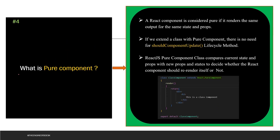The next question is: what is a pure component? A React component is considered pure if it renders the same output for the same state and same props. If we extend the class with pure component, there is no need for the shouldComponentUpdate lifecycle method. In my previous session we discussed all lifecycle methods — in the update section, shouldComponentUpdate checks whether the component should be updated. That is for React.Component. If you are using React.PureComponent, this method should be avoided. React pure component compares current state and props with new props and state to decide whether the component should re-render. If both state and props are the same, it will not render.